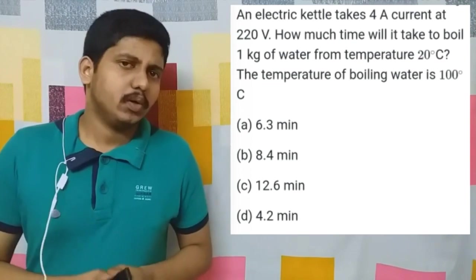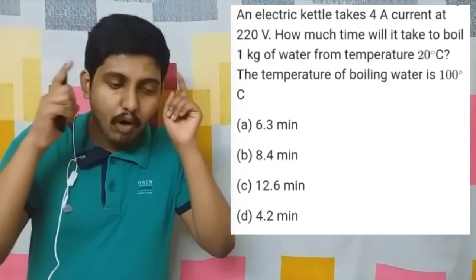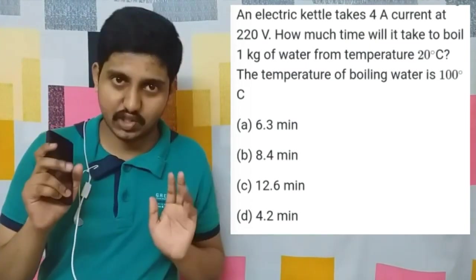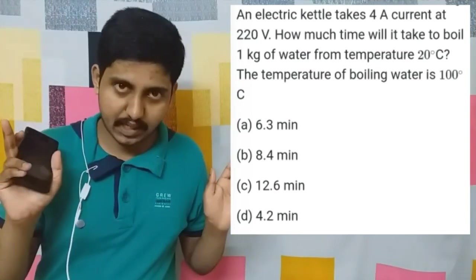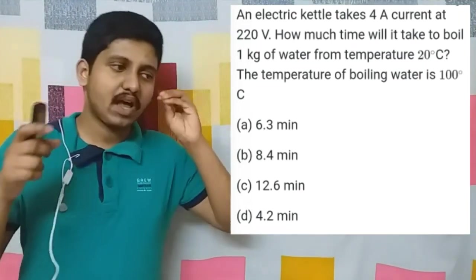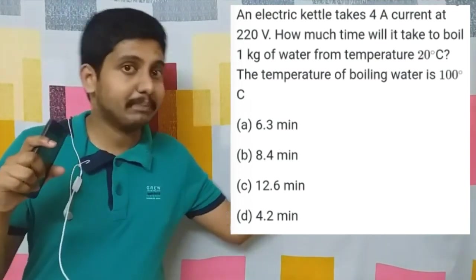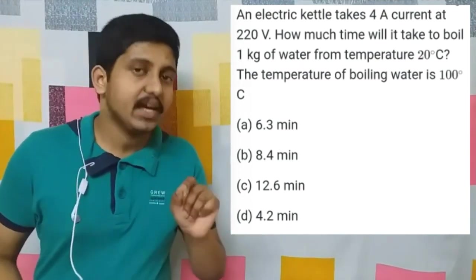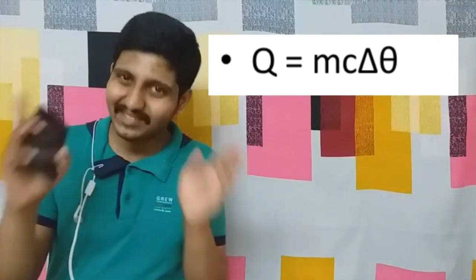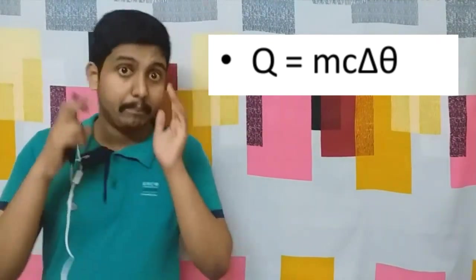What we should do is equalize the energies. We must use the equation Q = mcΔθ. Here we have m = 1 kilogram, but usually we express specific heat capacity in grams.